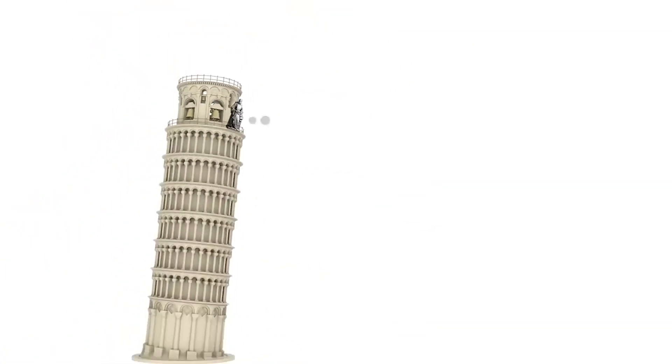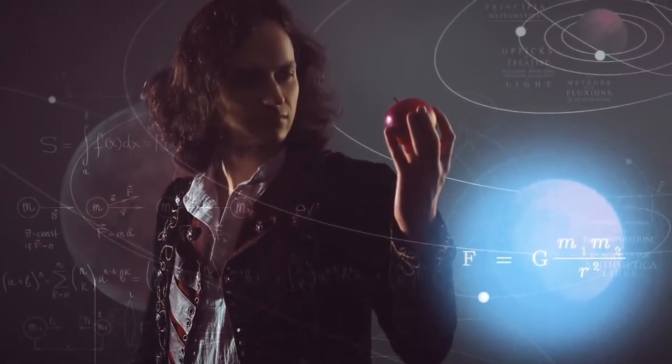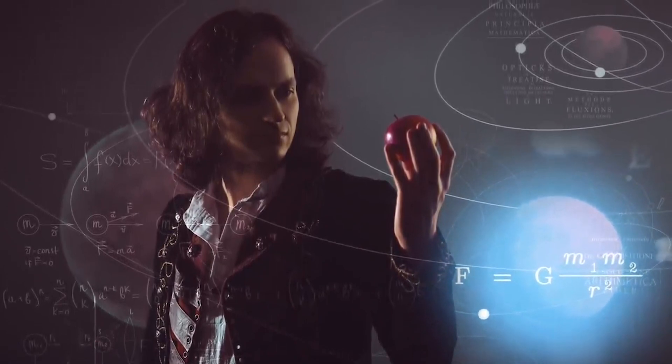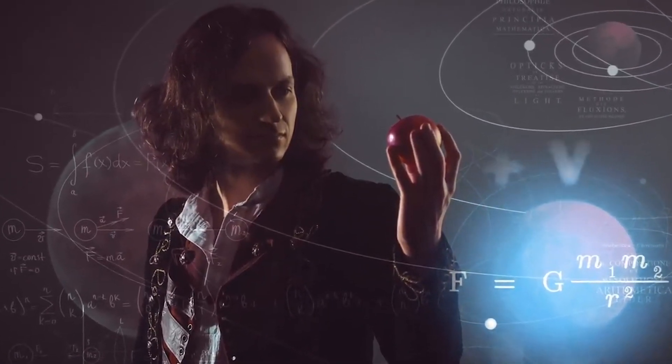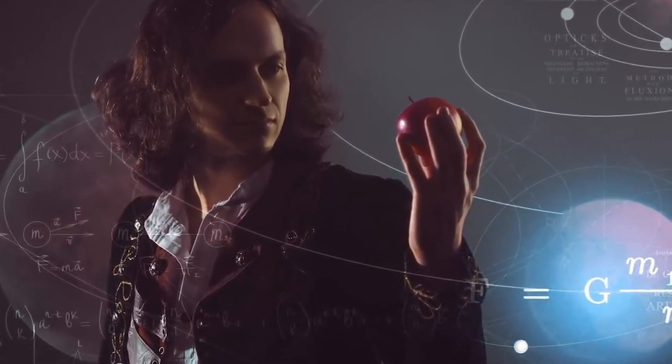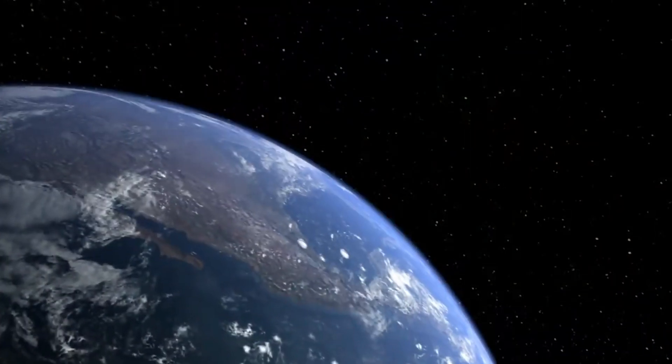When a planet is first formed or launched into space, it might have a certain amount of initial velocity. This velocity, combined with the gravitational pull of the sun, determines the shape of the planet's orbit. The most common type of orbit is an ellipse, which is a stretched-out circle.